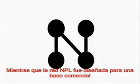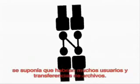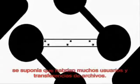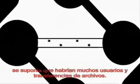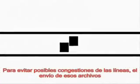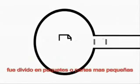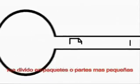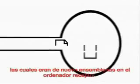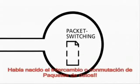Let's take a short detour to England. Since the NPL network was designed on a commercial basis, a lot of users and file transfer were expected. In order to avoid congestion of the lines, the sent files were divided into smaller packets, which were put together again at the receiver. Packet switching was born.